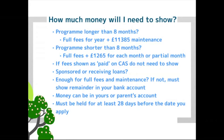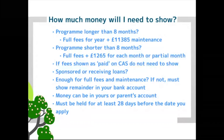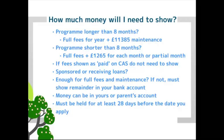If your programme is longer than eight months — which is normally the case for an undergraduate or one-year master's — you will need to show the full tuition fee for the first academic year (or the whole master's programme) plus £11,385 in maintenance or living expenses. If your programme is shorter than eight months, it's the full fee plus £1,265 for each month or partial month. So if your course is six months and one week, you will need to show maintenance for seven months — they count that partial month.